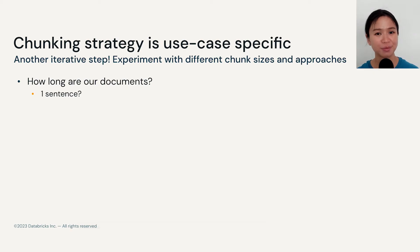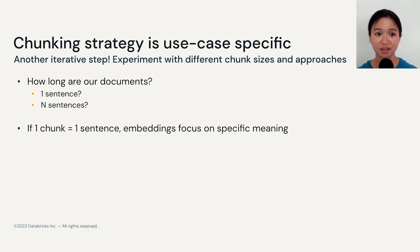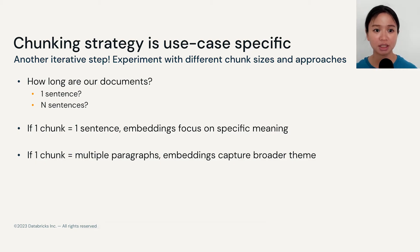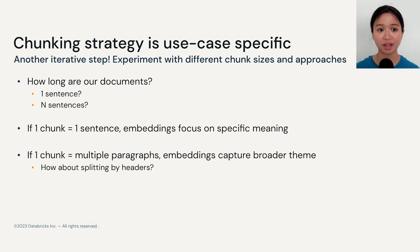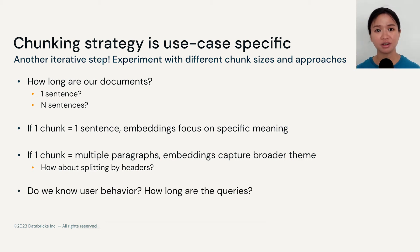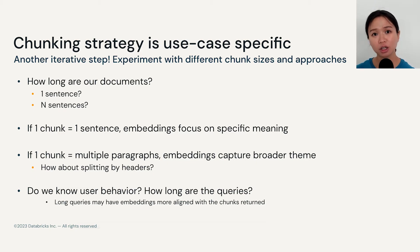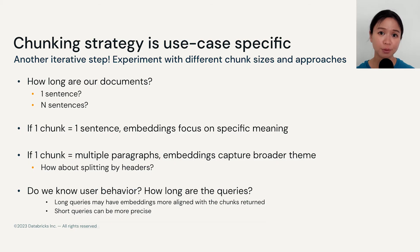Consider how long your document is — is it a single sentence or many sentences? If a chunk is only one sentence, your embeddings will focus on the specific meaning of that particular sentence. But if a chunk captures multiple paragraphs, your embeddings would capture a broader theme. You can split by headers, sections, or paragraphs. You should also consider user behavior: if you have longer queries, there is a higher chance for the query embeddings to align better with the returned chunks. If you have shorter queries, they tend to be more precise and a shorter chunk might actually make more sense.